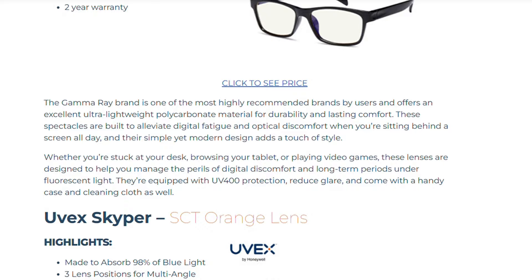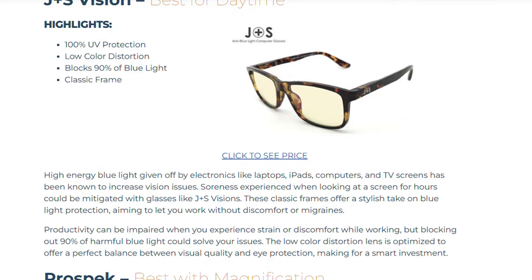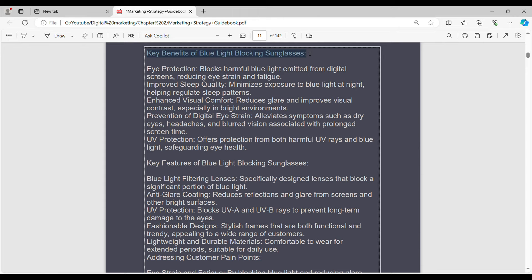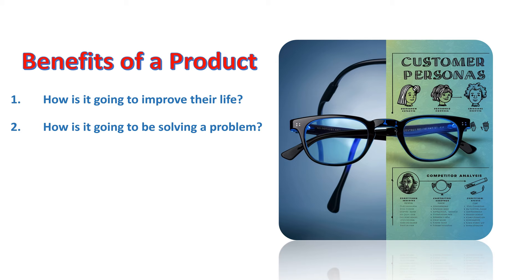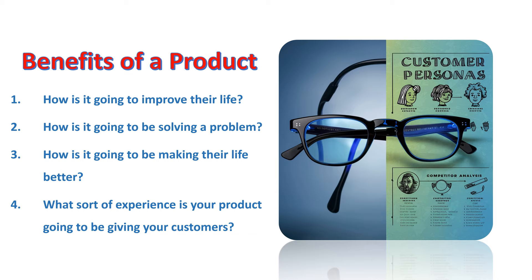Here are the demo products that you can choose from. The product is blue light blocking glasses. Now you're ready to get started. Let's begin by understanding what product details actually means. Product details means understanding the benefits and understanding the features of your product. The benefits of a product means what experience is your product going to be giving your customers — how is it going to improve their life, how is it going to be solving a problem, how is it going to be making their life better? What sort of experience is your product going to be giving your customers? That experience is called a benefit.